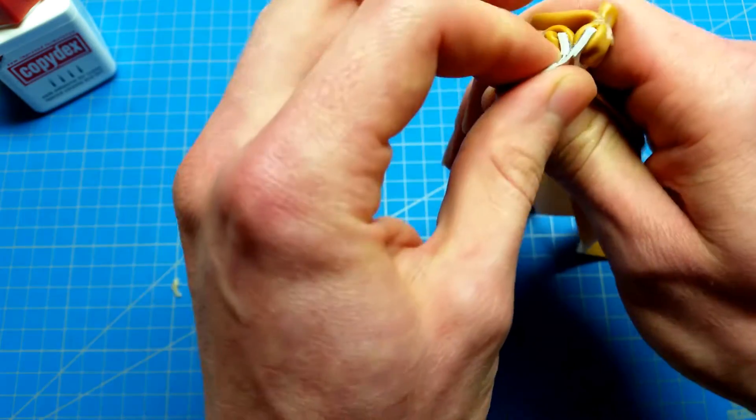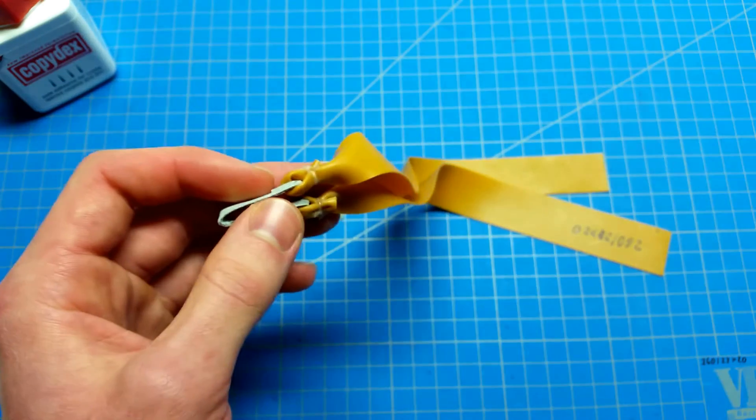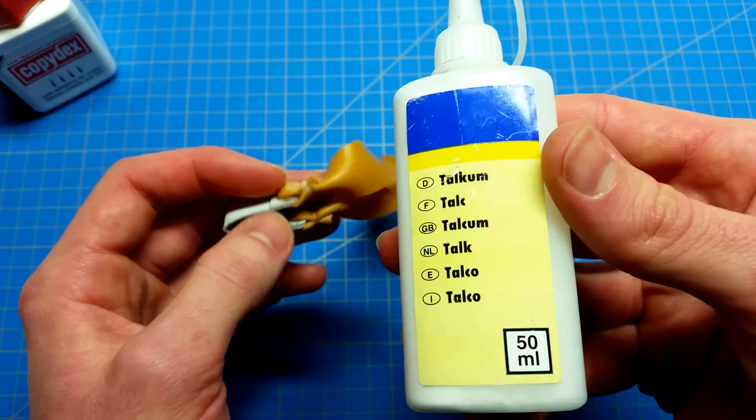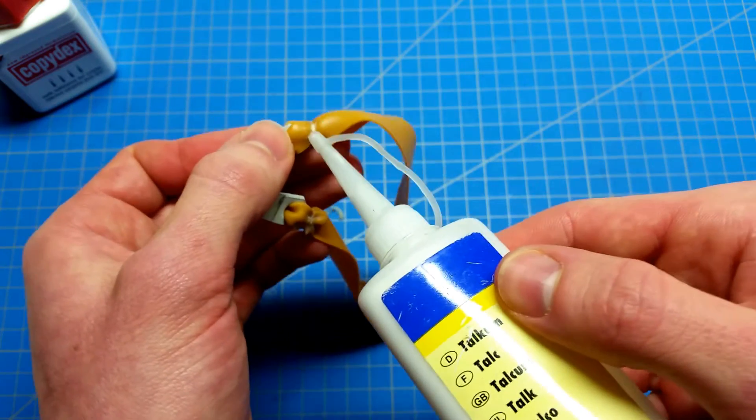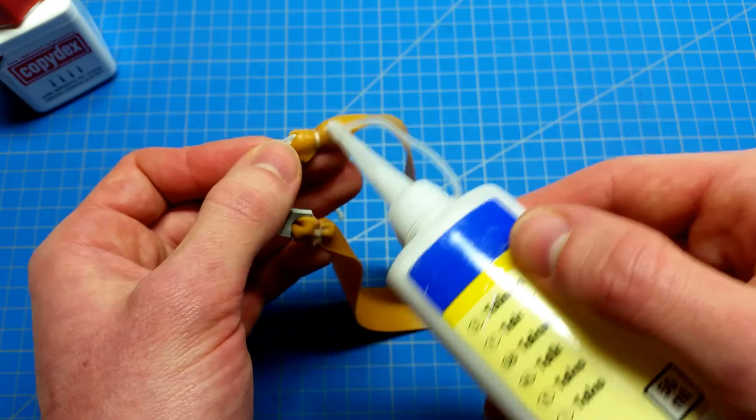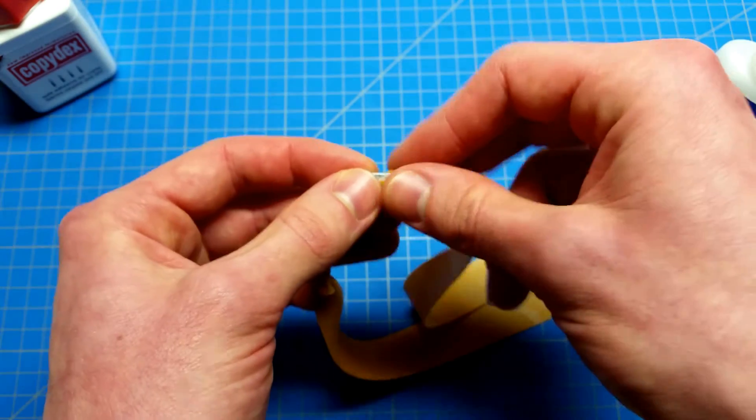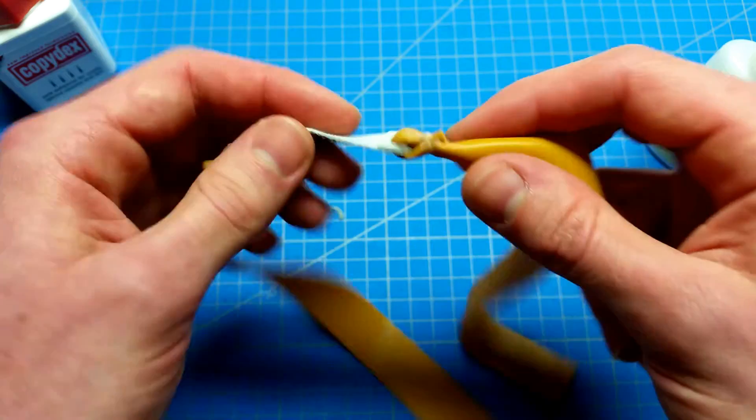That's why I always apply talcum powder where the Copidex is. I just sprinkle it on here and rub it in a little bit. I will make a video about that.